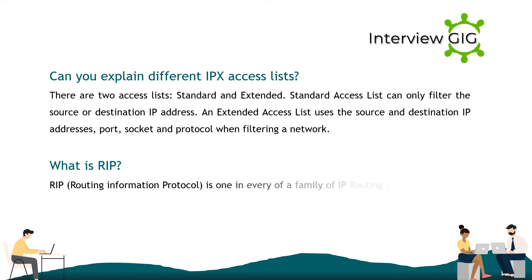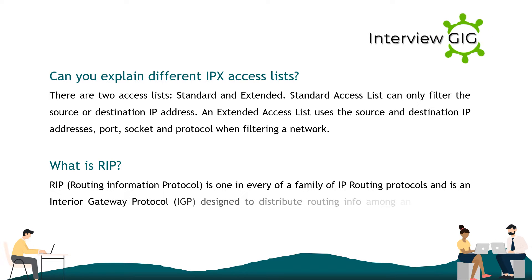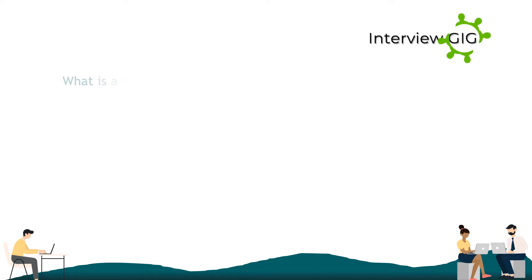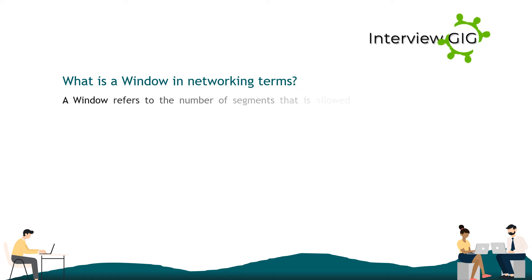What is RIP? RIP, Routing Information Protocol, is one of a family of IP routing protocols and is an Interior Gateway Protocol (IGP) designed to distribute routing information among an autonomous system. What is a window? In networking terms, a window refers to the number of segments that are allowed to be sent from source to destination before an acknowledgement is sent back.